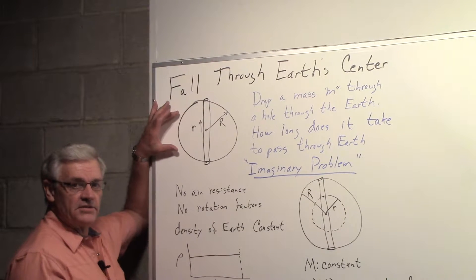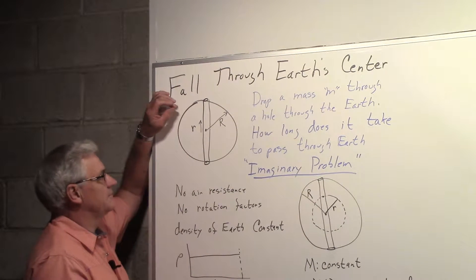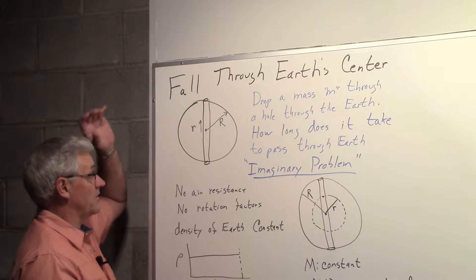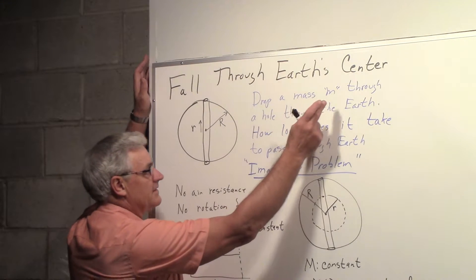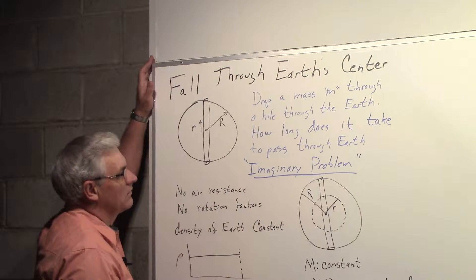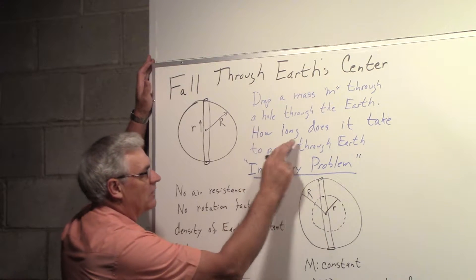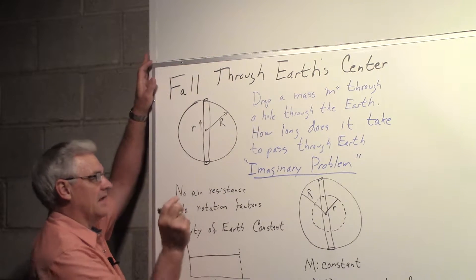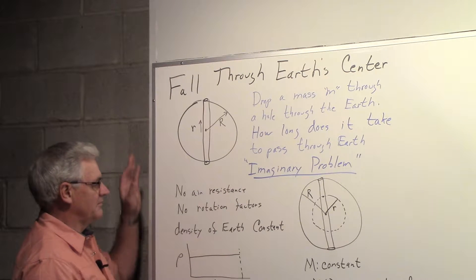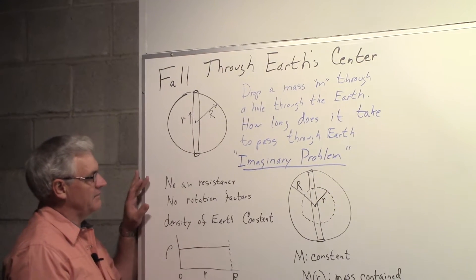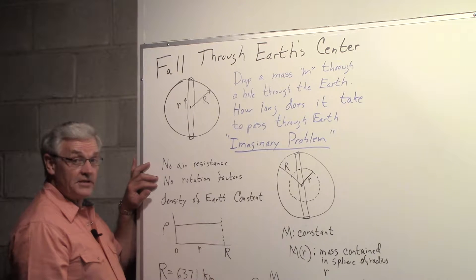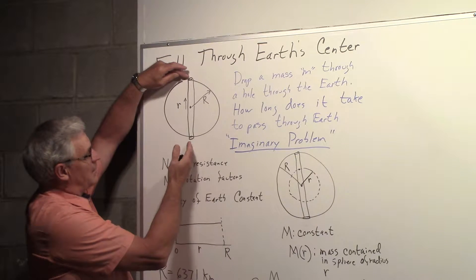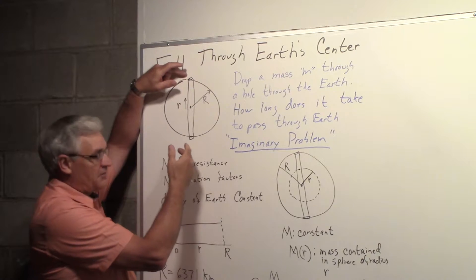Here we have a sketch of the Earth with a well all the way through it. We're going to measure distance from the center of the Earth with small r, and the radius of the Earth is R. We're going to drop a small mass m through the hole and find out how long it takes to pass through the Earth. There's no air resistance in this calculation and no rotation factors to worry about — you could eliminate rotation effects by imagining the well going from the North Pole to the South Pole.